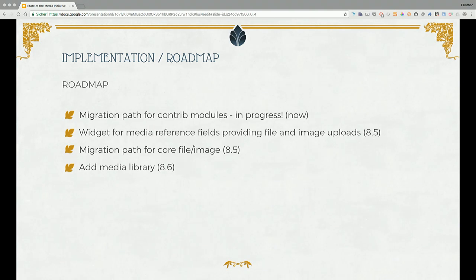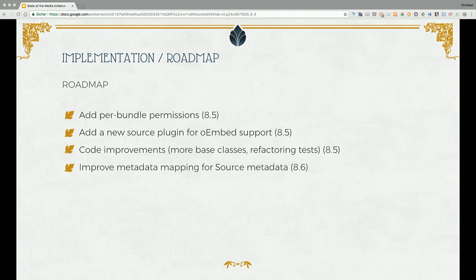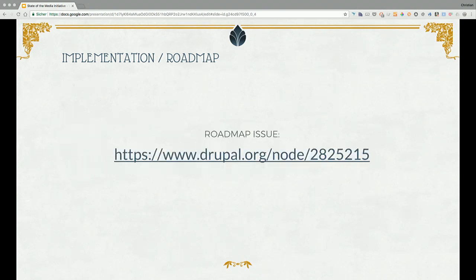We have to implement widgets for media reference fields that give us parity with the current situation in core for files and images, and we need migration paths for file and image. This is all targeted for 8.5. Media library is targeted for 8.6. Other smaller issues we're working on include per-bundle permissions, new source plugins for oEmbed support so you can add media types for YouTube or Vimeo, code improvements, and improved metadata mapping.